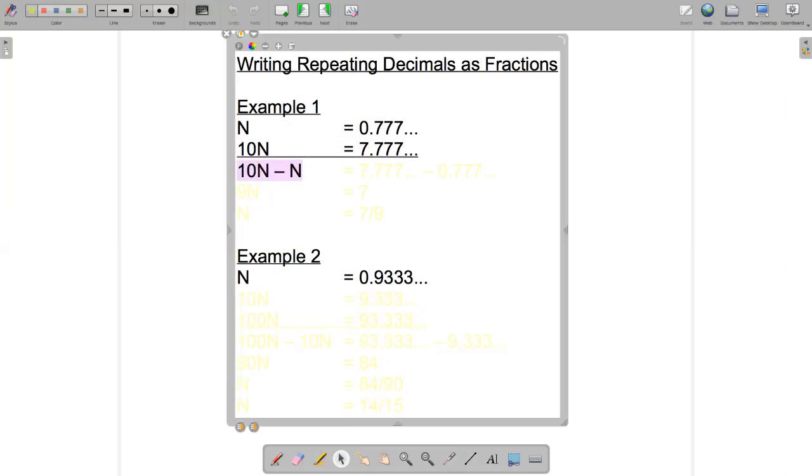So we do 10n minus n and on the right hand side we'll have 7.7777 and so on minus 0.7777 and so on.